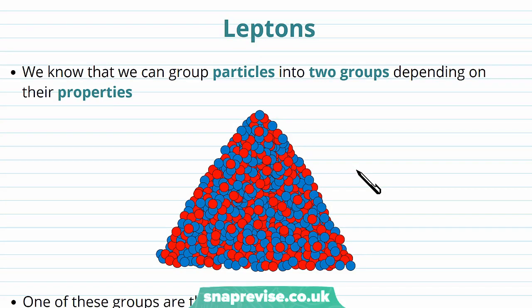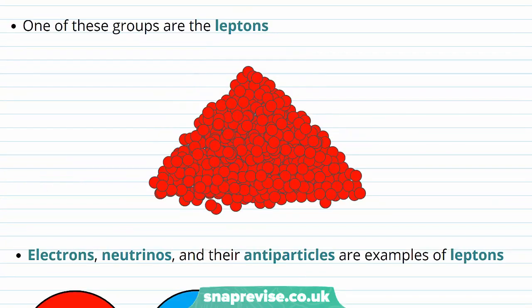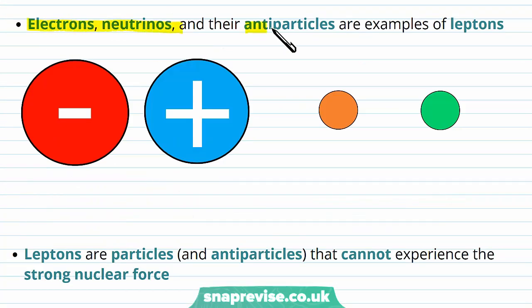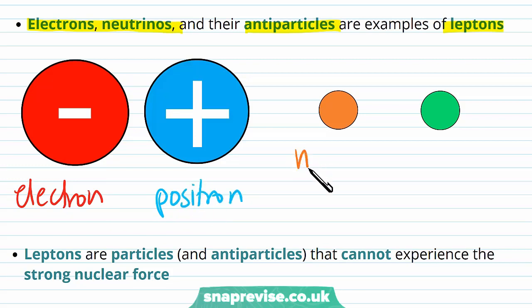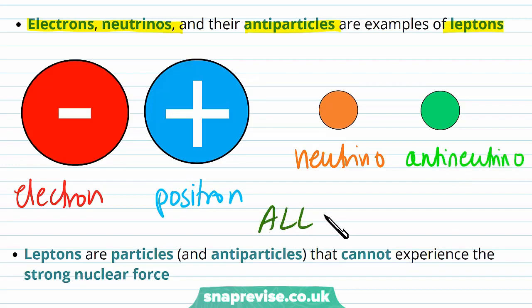The other group of particles are the leptons. We can group particles into two groups depending on their properties, and one of these groups are the leptons. Electrons, neutrinos, and their antiparticles are examples of leptons — so we have the electron, its antiparticle the positron, the neutrino, which is a massless chargeless particle, and the antineutrino. All four of these particles are leptons.